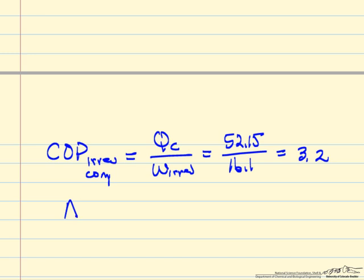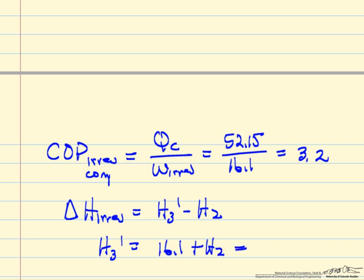And our delta H irreversible compressor, delta H irreversible is going to be H3 prime minus H2, so this means H3 prime is 16.1 plus H2, so it's 92.3 BTUs per pound.